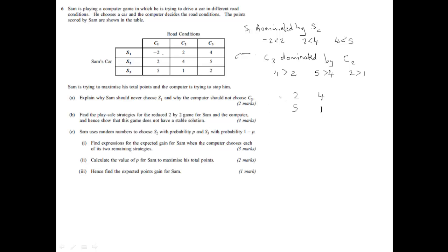Now, a play-safe strategy is to look at each strategy for the row player and each strategy for the column player and find the worst case scenario. And we then pick the best of the worst. So if Sam plays S2, then the worst case scenario is that he gains 2. And if Sam plays S3, then the worst case scenario is that he gains 1. We then pick the best of those, which is clearly 2, because remember the higher numbers are better for Sam. And because we look for row minimums, and we look for the maximum of the row minimums. That's a maximin. And it's the row maximin.